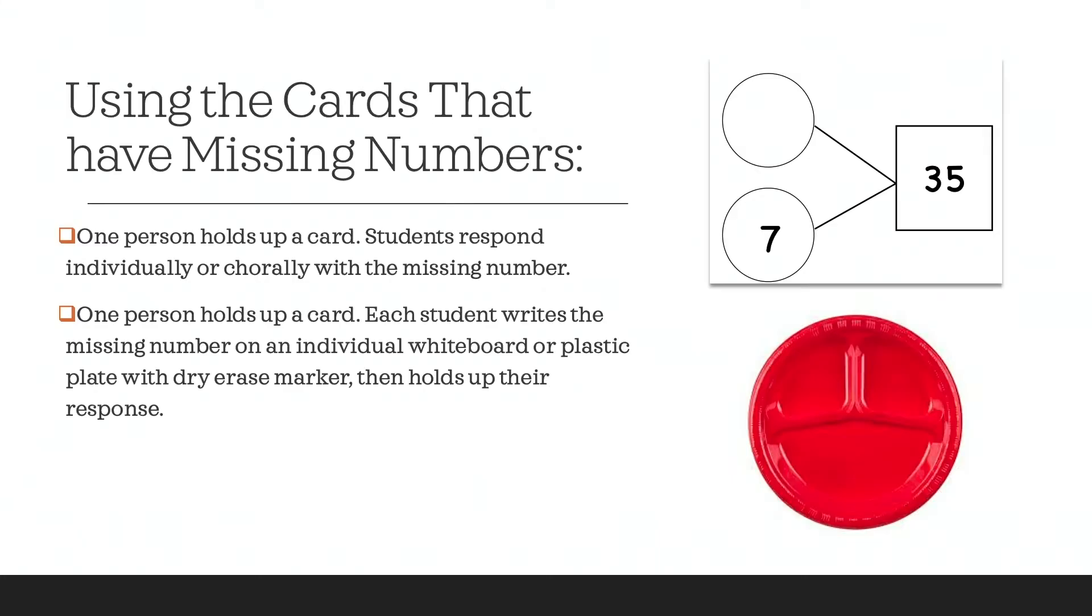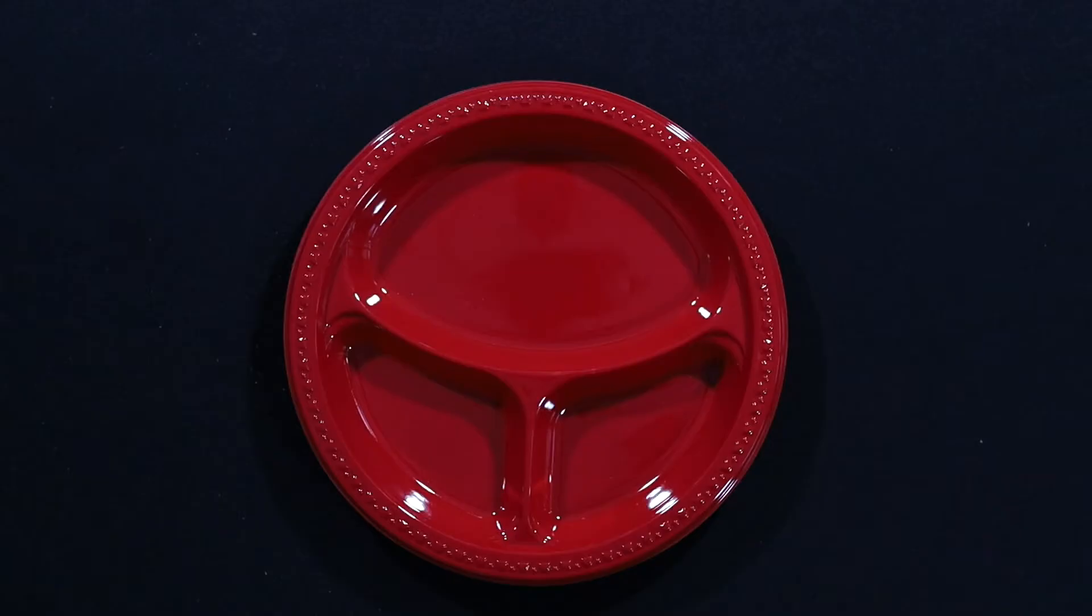One of the things I love using is a buffet plate to have kids write with dry erase marker, which I'll show you in a minute. But one student could hold up the card and the student can respond individually or even chorally with the missing part that might go in it. So for example, we have how many groups of seven go into 35 and kids could respond five. Or one person could hold the card and each student could write the missing part on an individual whiteboard or in a plastic plate. So let's take a look at this plastic plate as an example.